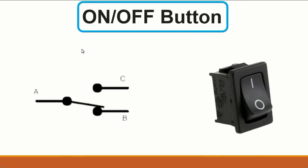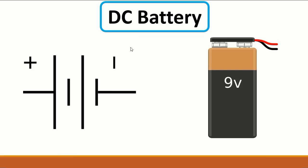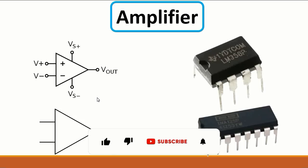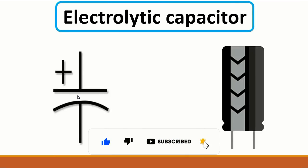Then we have the off button with its symbol. Here we have the DC battery symbol. Then we have the amplifier — which is an IC in a DIP package. It has V-plus, V-minus, ground, and V-out pins. This particular amplifier is the LM358P, which is a very well-known amplifier.